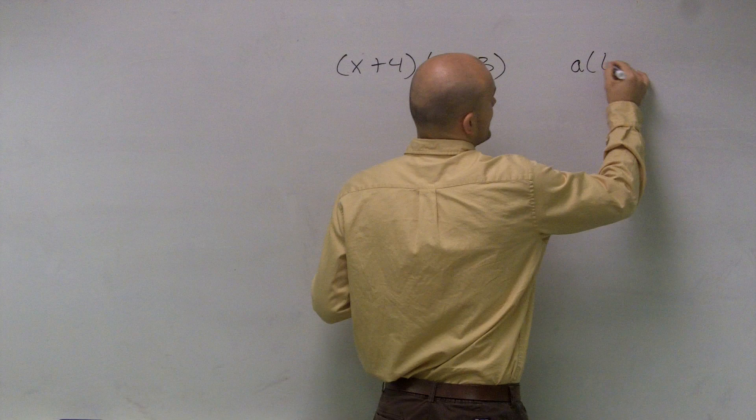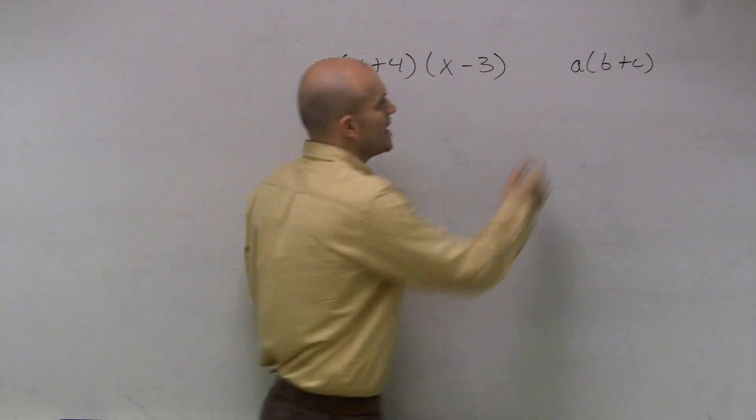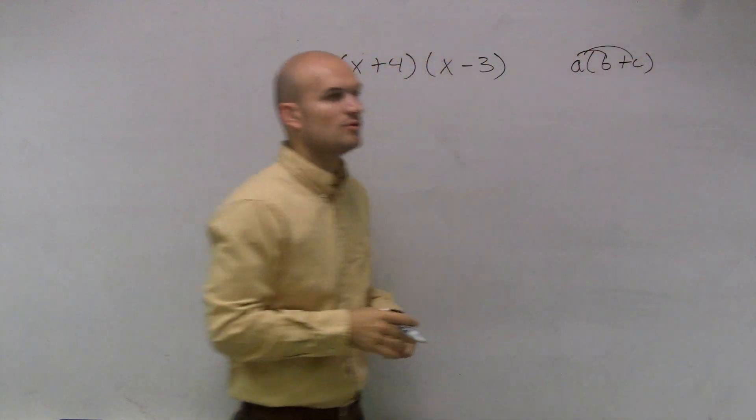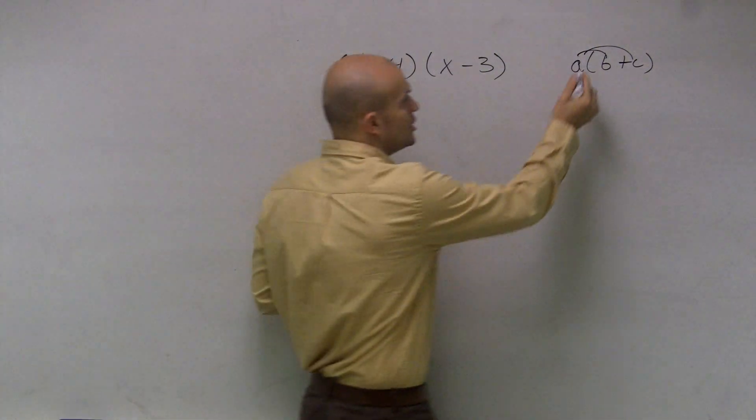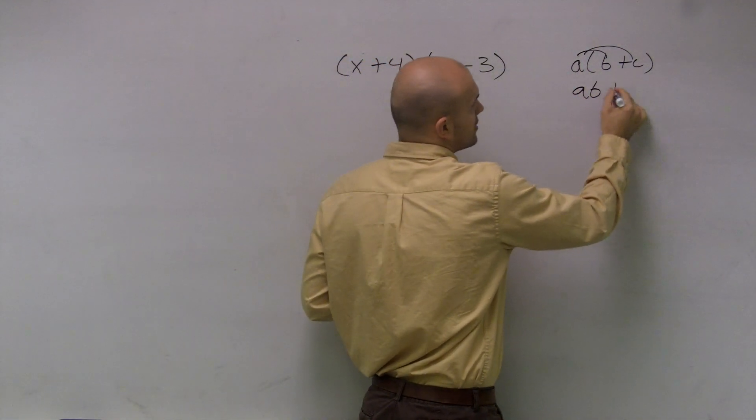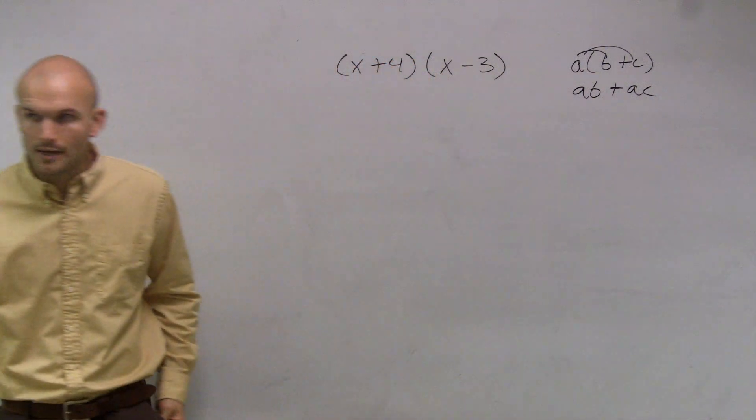First thing is the distributive property. And remember the distributive property states whenever you have a number multiplied by parentheses and numbers, you have to multiply that number times both of your terms inside the parentheses, right?